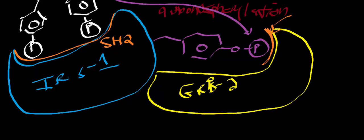GRB2 also has another domain called SH3, to distinguish it from SH2. What SH2 does is bind to the phosphotyrosine residues, whereas SH3 is different — it binds to proline-rich sequences in proteins. So if you have a protein that has a proline-rich sequence, it's likely to bind to the SH3 region of GRB2.